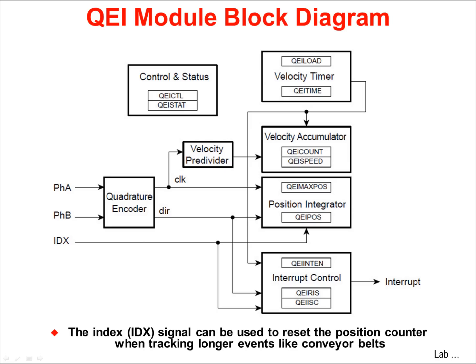On the left, note the A and B inputs. There's also an index input that can be used to reset the position counter when you're tracking longer events like conveyor belts.